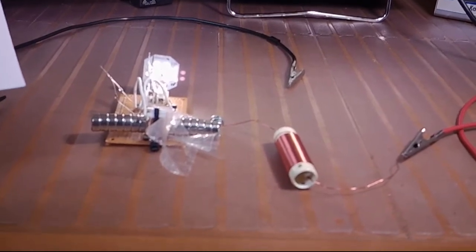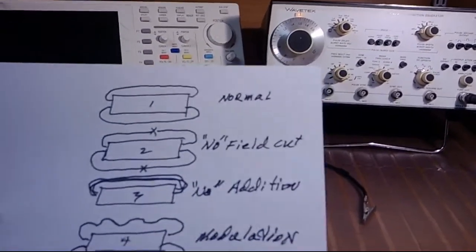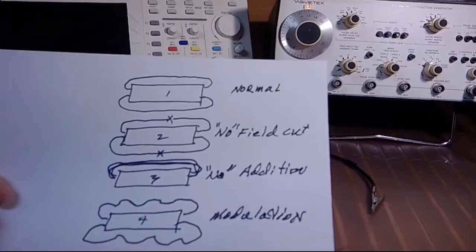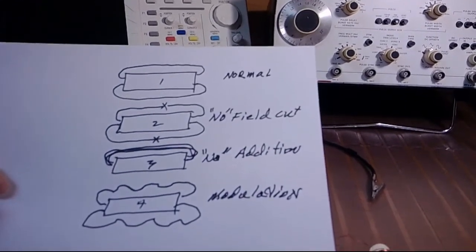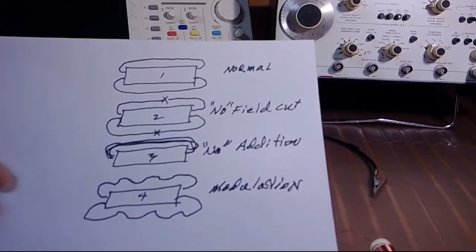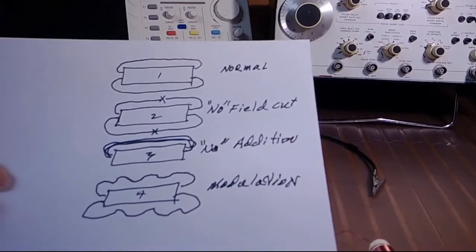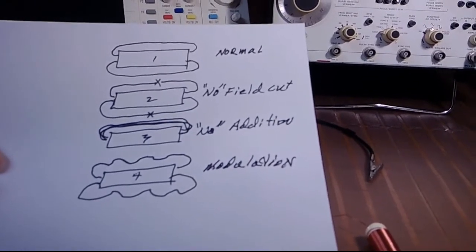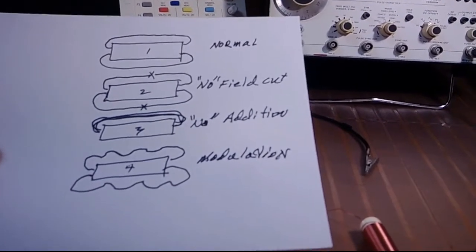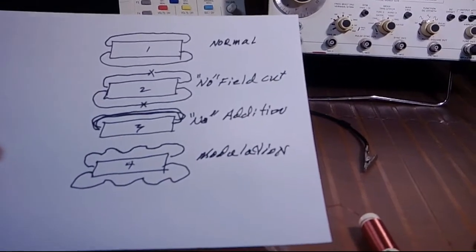Here what I have is at the very top, number one is a normal magnet. You see the magnetic field around the magnet, I only drew two lines top and bottom. Then we see number two and I say no field cut, that's because I am not cutting the magnetic fields in the magnets in any way.